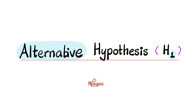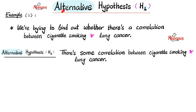That was the null hypothesis. But what about the alternative hypothesis? Let's suppose we are trying to find out whether there is a correlation between cigarette smoking and lung cancer. The null hypothesis (H₀) assumes there is no correlation, whereas the alternative hypothesis (H₁) assumes that a correlation does exist. The null hypothesis is abbreviated H sub zero; the alternative hypothesis is abbreviated H sub one.